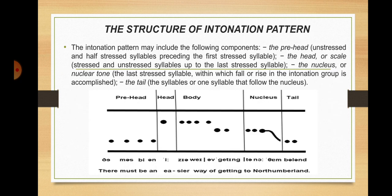The intonation group may include the following components. The prehead — that is, unstressed and half-stressed syllables preceding the first stressed syllable. The head or scale — that is, stressed and unstressed syllables up to the last stressed syllable. The nucleus or nucleotone — it is the last stressed syllable within which the fall or rise in the intonation group is accomplished. And the tail — the syllable or syllables that follow the nucleus.